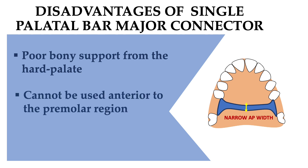It cannot be placed anterior to the premolar region because it interferes with the tongue and would continuously irritate it. The last disadvantage is poor vertical support — again because its anterior-posterior width is narrow. It is only used when one or two teeth are missing in a tooth-supported partial edentulous space. Vertical support can be increased by adding rests.